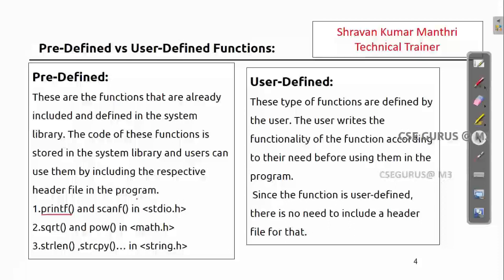The header file is stdio.h — standard input/output. Another example is the sqrt function and the pow function. sqrt finds the square root of a number; for example, sqrt(36) gives 6. pow takes two inputs: pow(2, 5) is 2 to the power 5, which is 32. These are defined in math.h. String manipulation functions like strlen and strcpy are also predefined, defined in the system library.